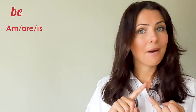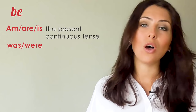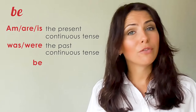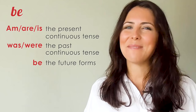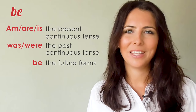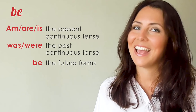Let's move on and talk about 'be.' Be is the auxiliary verb used in the continuous or progressive tenses — 'am,' 'are,' or 'is' in the present continuous tense, and 'was' and 'were' in the past continuous tense. In the future forms, we use the infinitive 'be.' The main verb in the continuous tenses always uses the -ing form, but the 'be' auxiliary verb will always be there helping out.